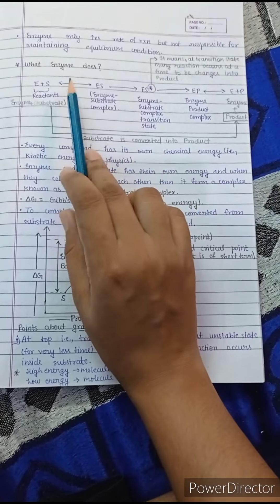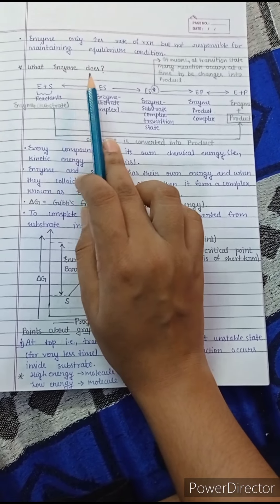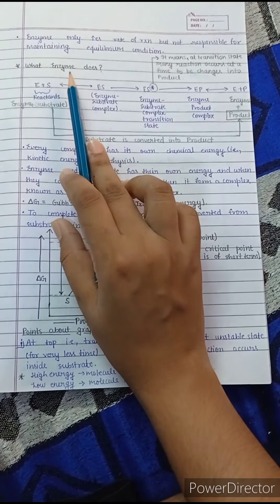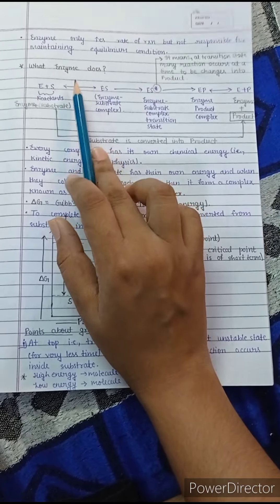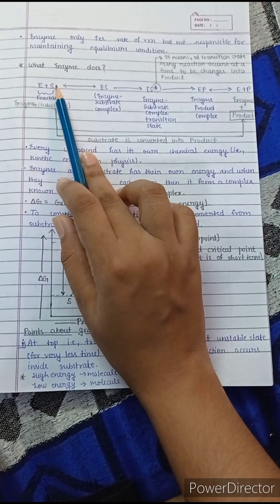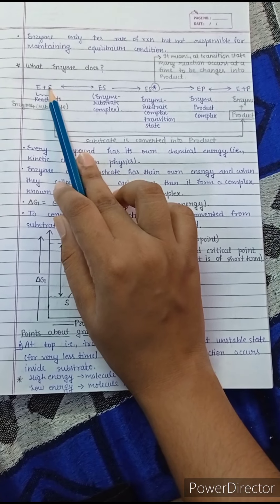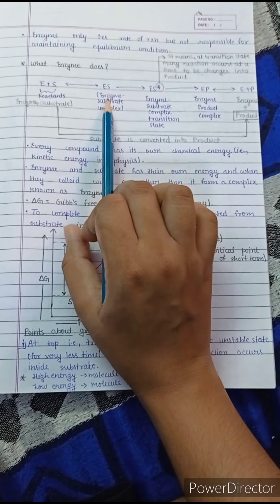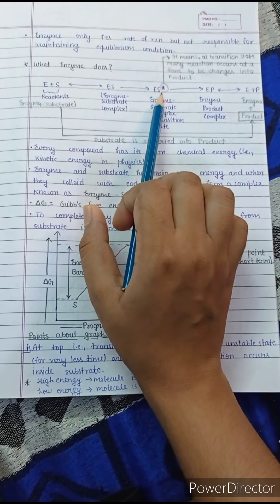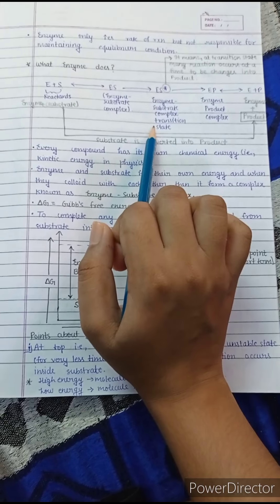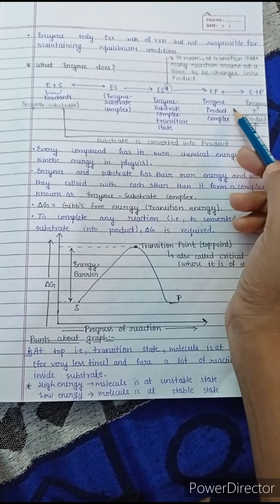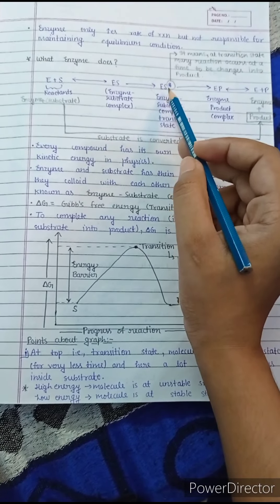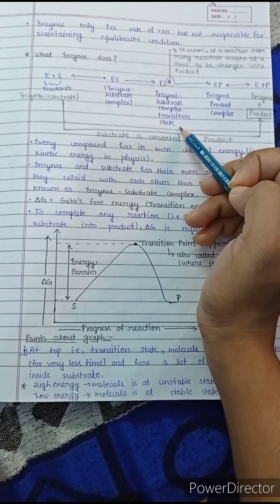Hello everyone, today we are going to start part two of the Enzyme Engineering module for first BTech Biotechnology second-year students. We will see how the enzyme and substrate form the enzyme-substrate complex, after which comes the enzyme-substrate complex transition state, and then the enzyme-product complex is formed, which is further converted into enzyme and product.